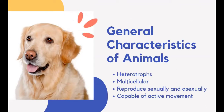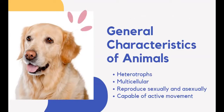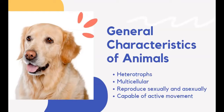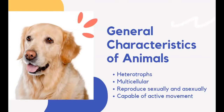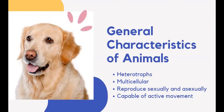Animals also reproduce sexually and asexually, because reproduction is a vital function of all living things. Animals reproduce to perpetuate life and ensure that their kind lives on. Reproduction allows the passing of hereditary traits from parents to offspring. Most animals reproduce sexually through the union of sperm and egg cells. Hydras, sponges, and echinoderms reproduce asexually.